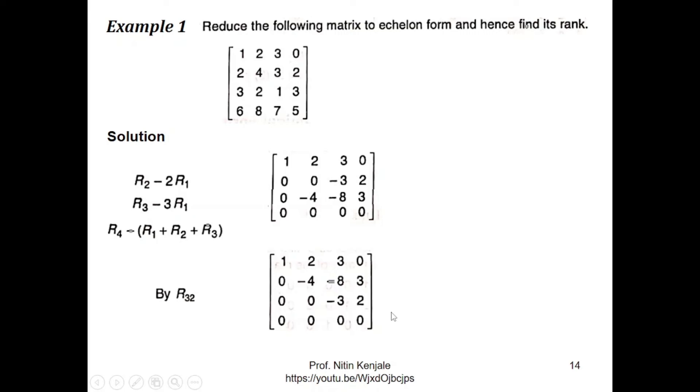Now observe that number of zeros before a nonzero element in the first row is 0, which is less than or equal to the number of zeros before a nonzero element in second row which is 1, which is less than or equal to the number of zeros before a nonzero element in third row which is 2 and so on. So this matrix is in row echelon form.